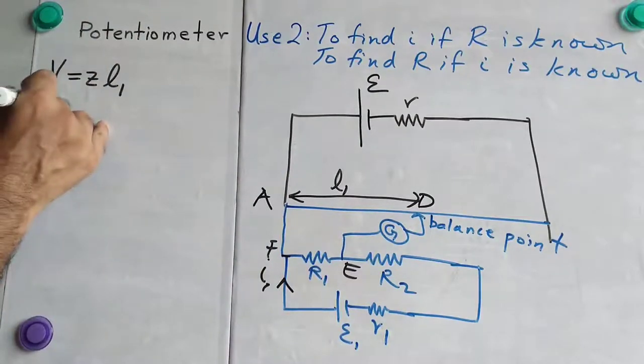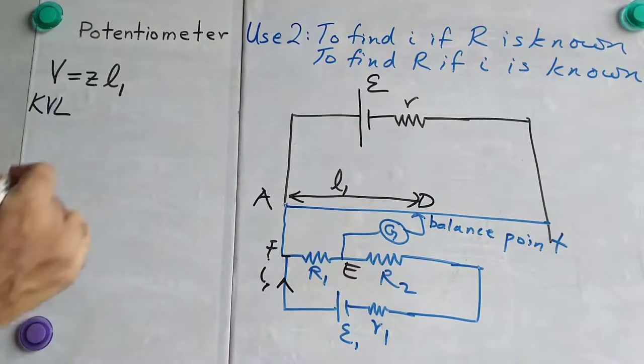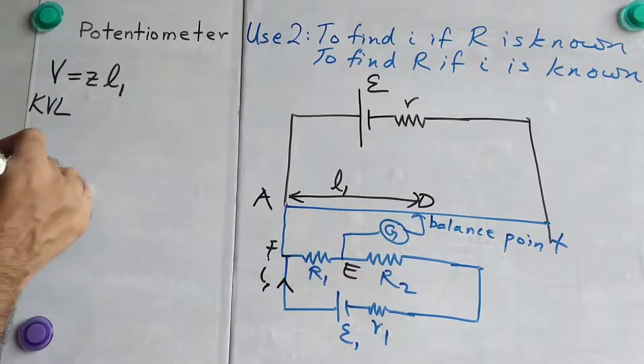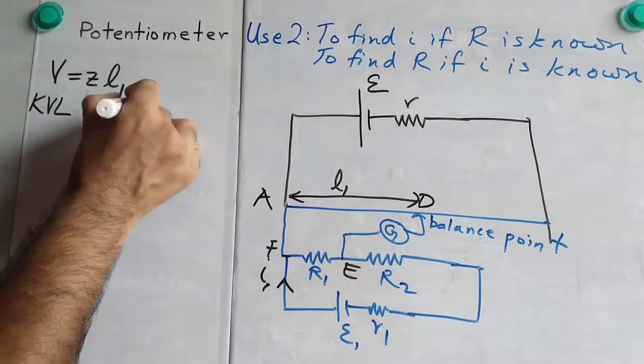and apply KVL. So, now we are applying KVL to loop A, D, E, F, A.